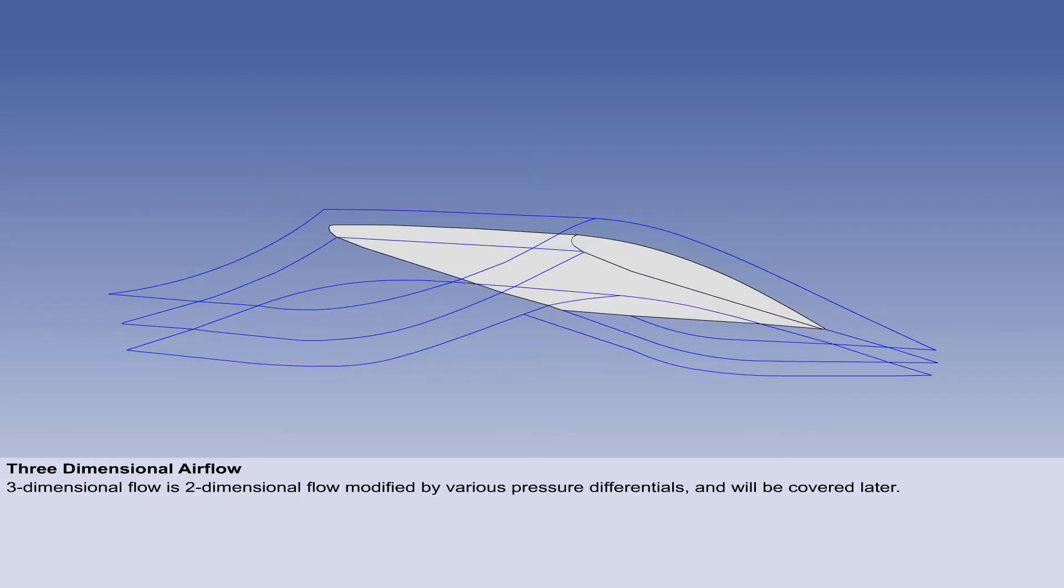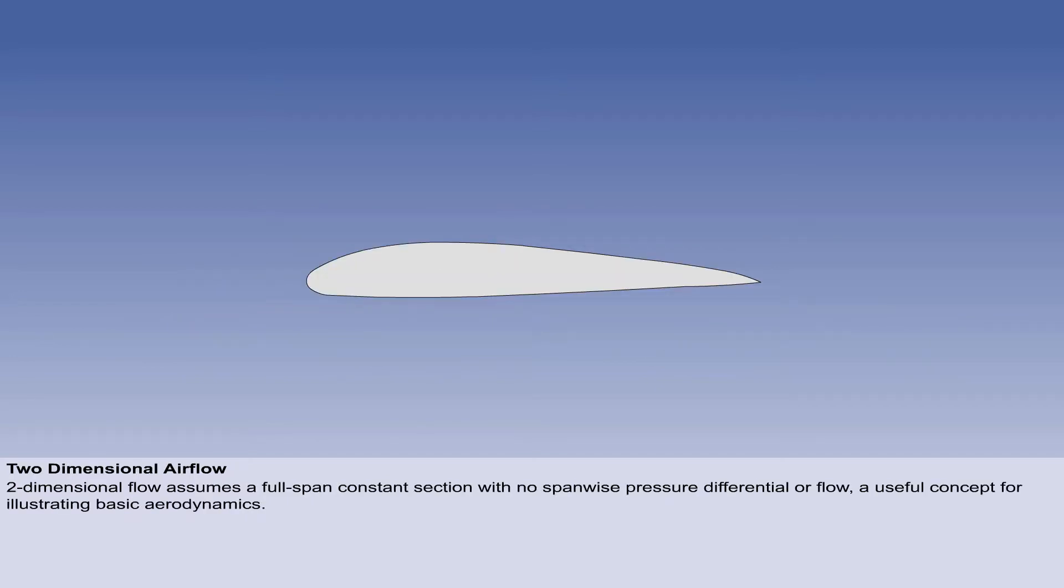Three-dimensional airflow is the true airflow over an aircraft and consists of a two-dimensional flow modified by various pressure differentials. This will be examined later in the syllabus. For now, we will consider two-dimensional airflow, which assumes a wing with the same aerofoil section along its entire span, with no span-wise pressure differential or flow. This concept is used to illustrate the basic principles of the generation of aerodynamic force.